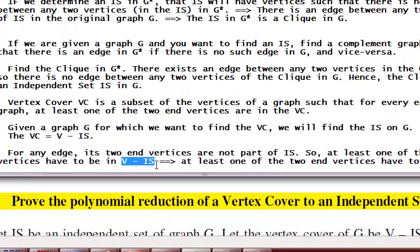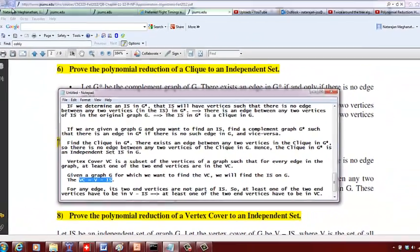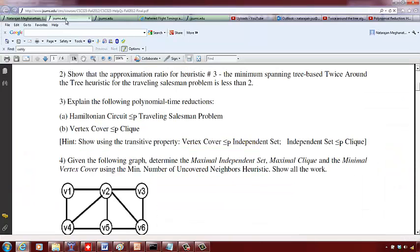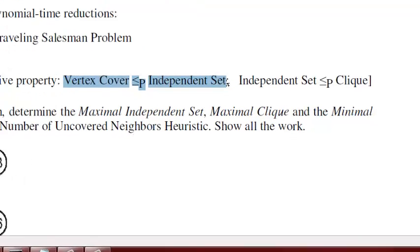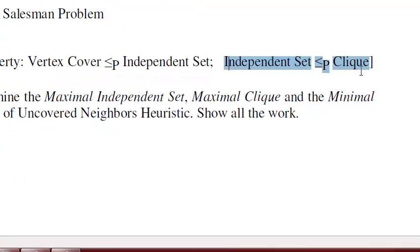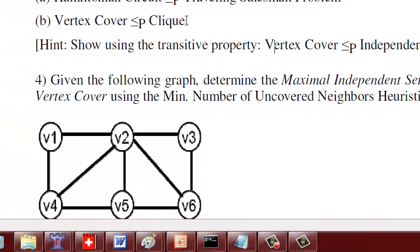Once you determine the independent set IS, find V minus IS. That is basically the vertex cover — the vertex cover is V minus IS. So for example, if you are asked to show the reducibility of vertex cover to a clique, you can reduce first from vertex cover to independent set, and then from independent set to a clique. Using the transitive relation, we can say a vertex cover is reducible to a clique.